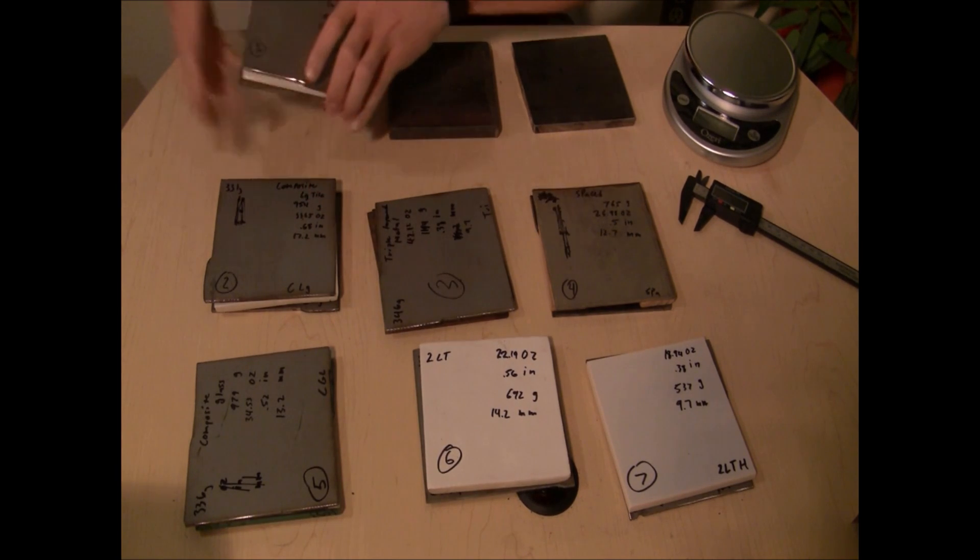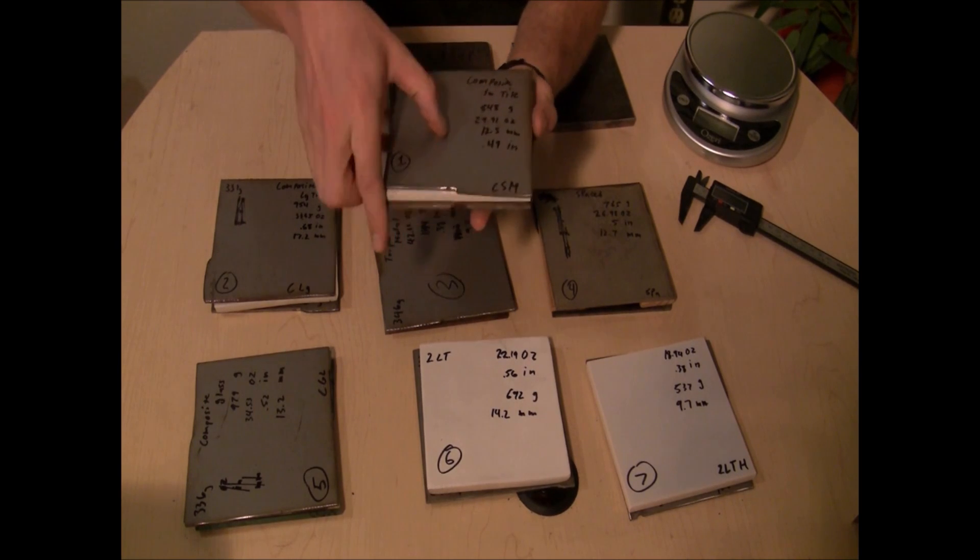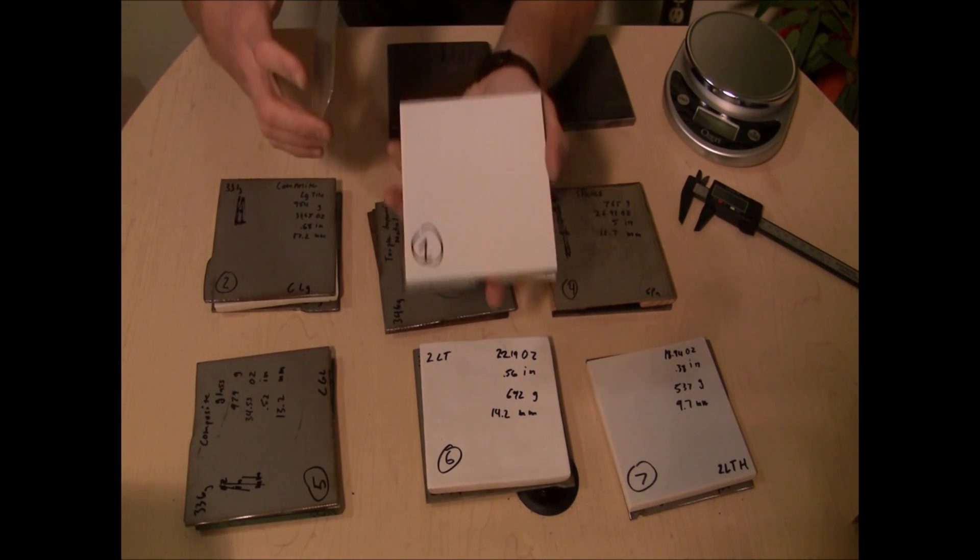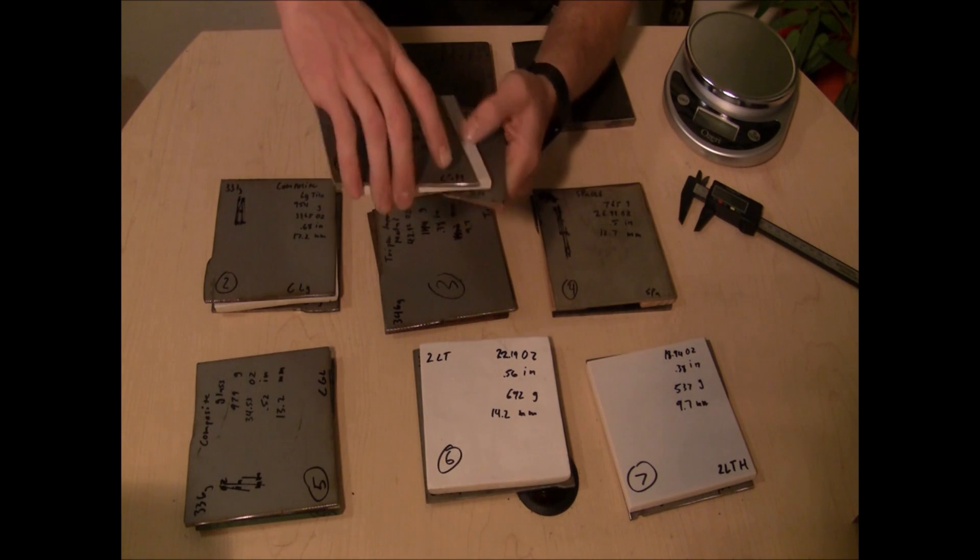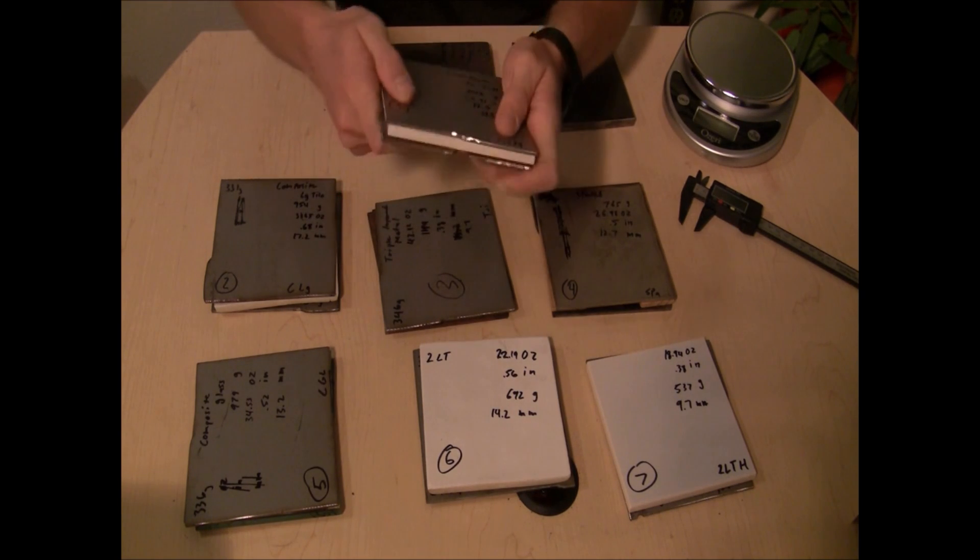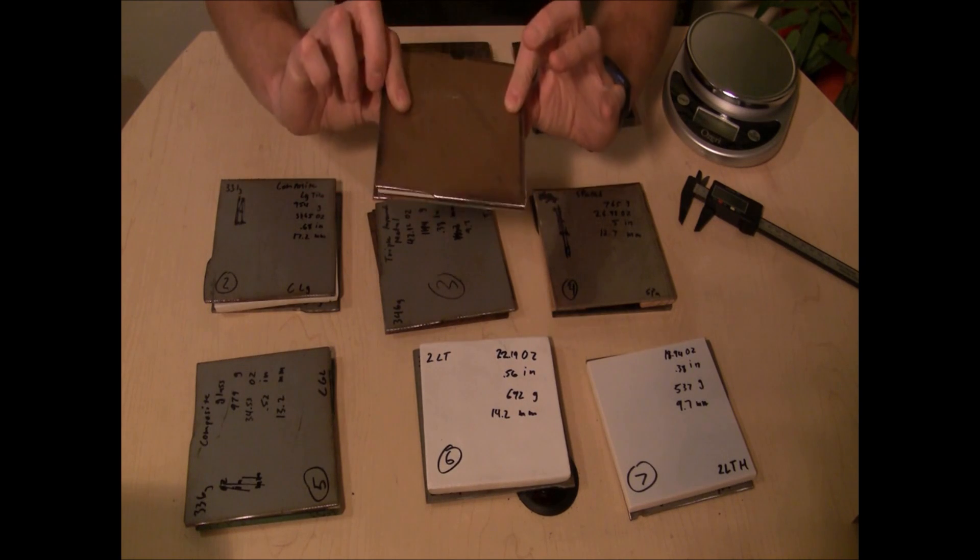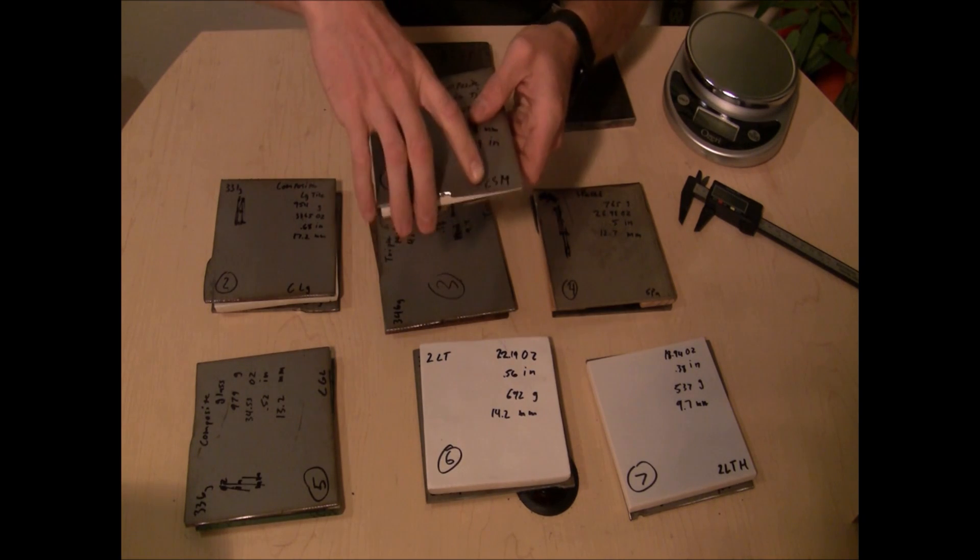Our first test of the composite armor concept, we'll use a 6 millimeter or 1/4 inch thick normal ceramic floor tile, sandwiched between these two 3 millimeter or 1/8 inch thick mild steel plates.